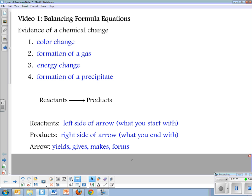The arrow means yields, or gives, or makes, or forms. Reactants yield products. Reactants make products. You can replace with any of those words.